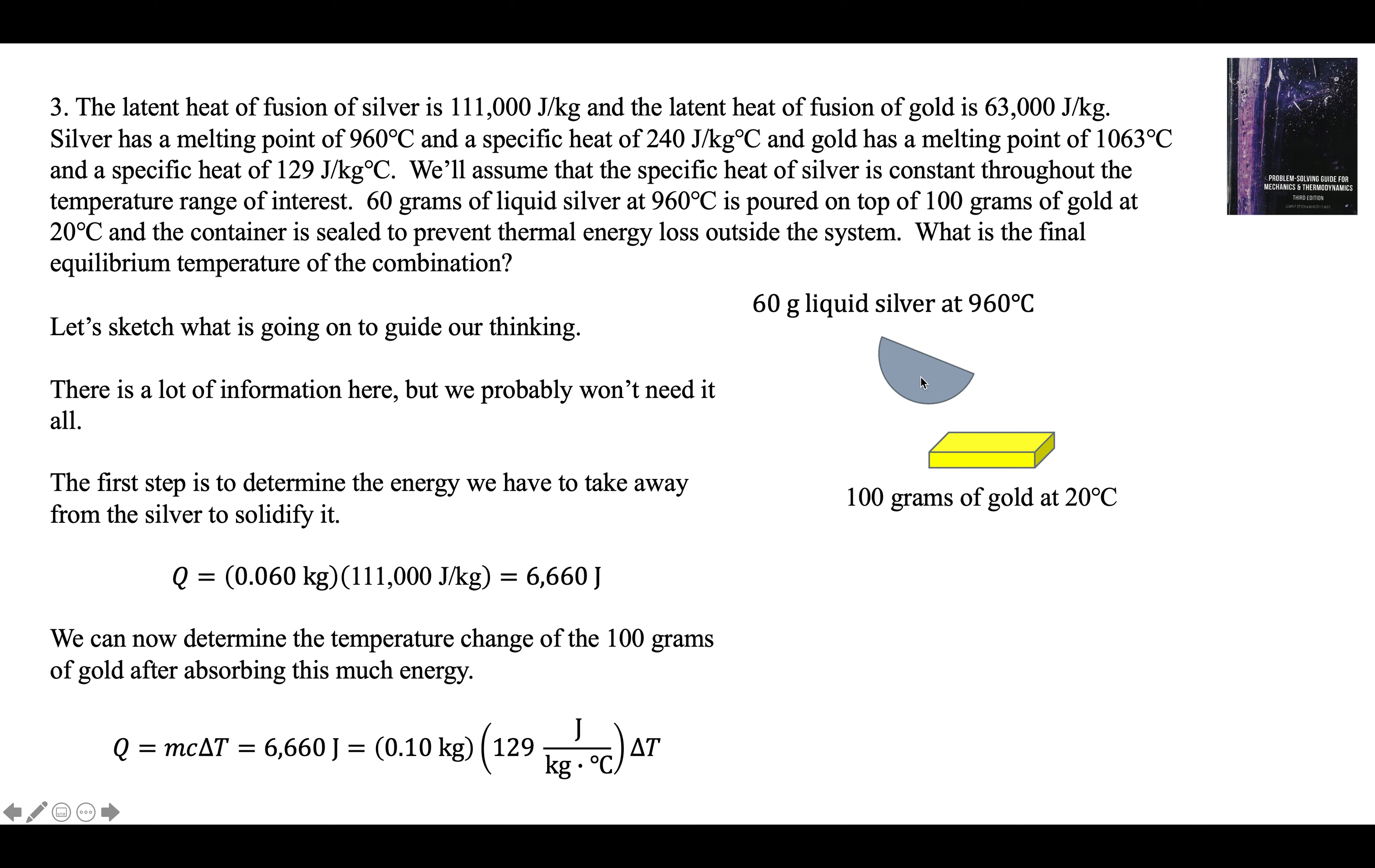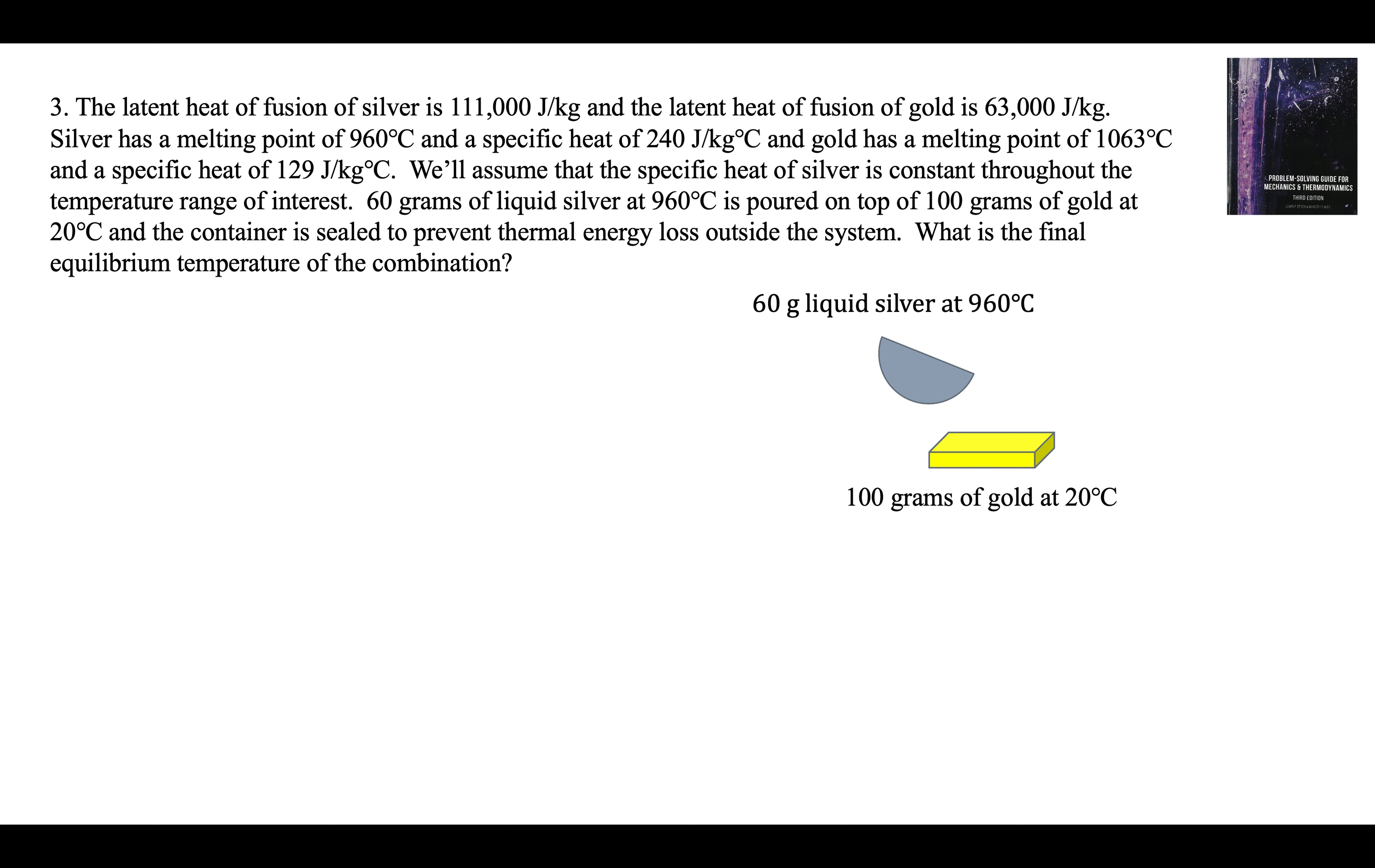There's the heat capacity of gold and there's delta T for the gold. How many degrees will the gold go up when you pour the liquid silver on it and it solidifies? It's still 960. The answer is delta T for the gold is 516 degrees. That's a lot. It's easy to change the temperature of gold. It's got a low specific heat and silver has a high latent heat of fusion.